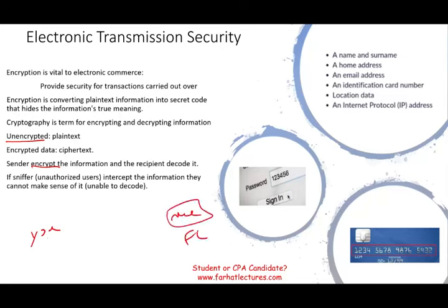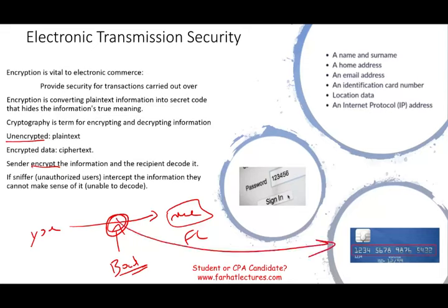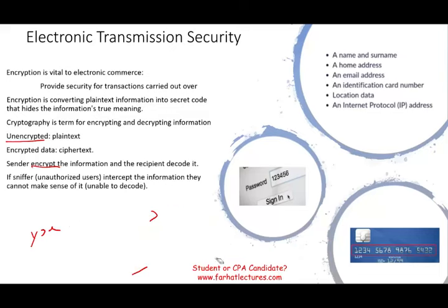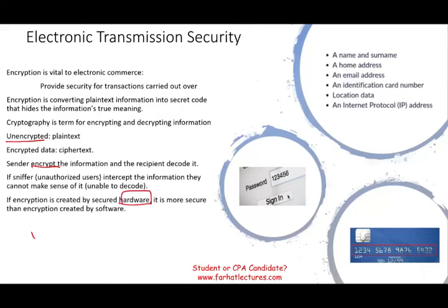For example, between you and Farhat Lectures, there might be a bad actor who sniffs or intercepts this information. The key point is: if they intercept your credit card data, they cannot make any sense out of it because the numbers are encrypted — they look weird. Also note that encryption created by hardware is more secure than encryption created by software, though encryption does use computing power and costs money.